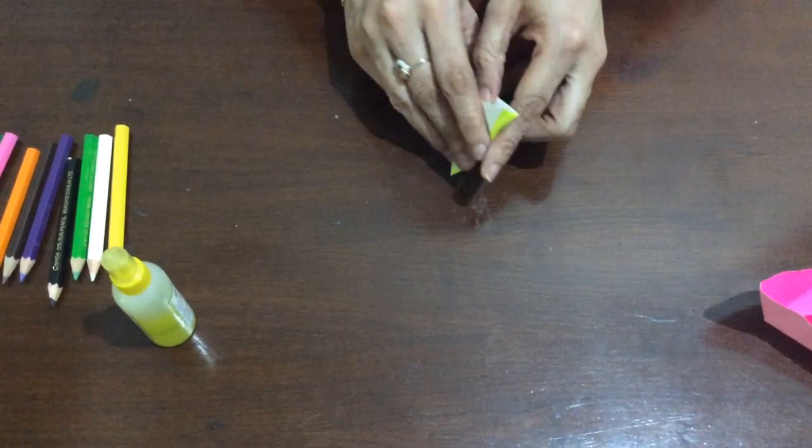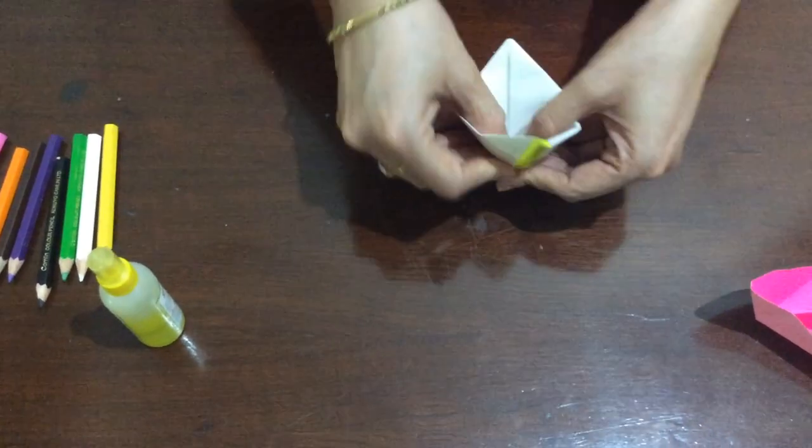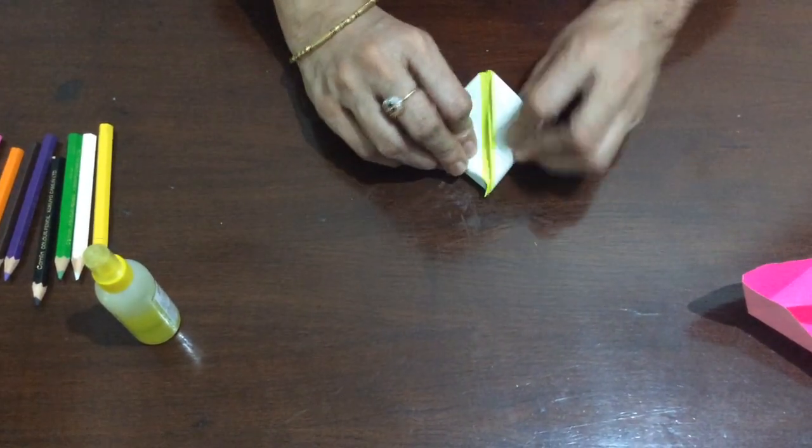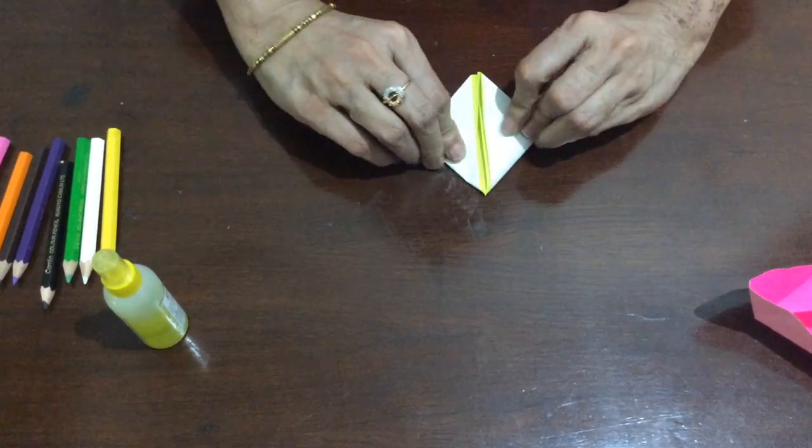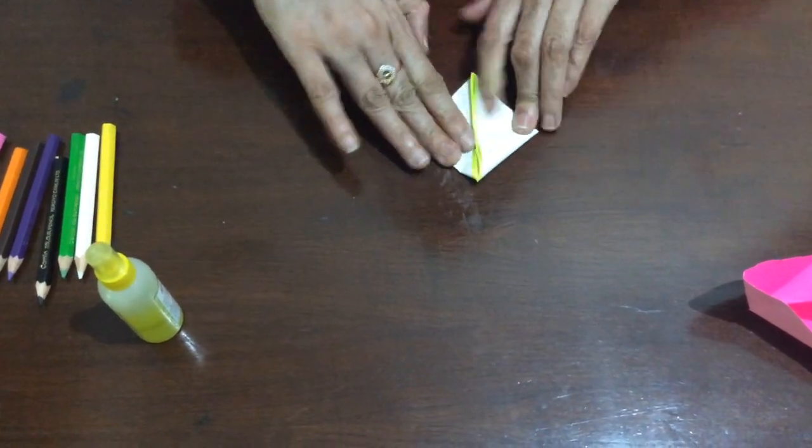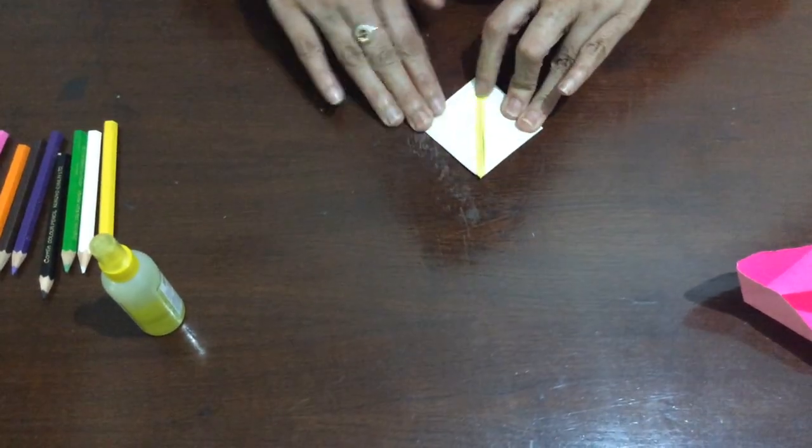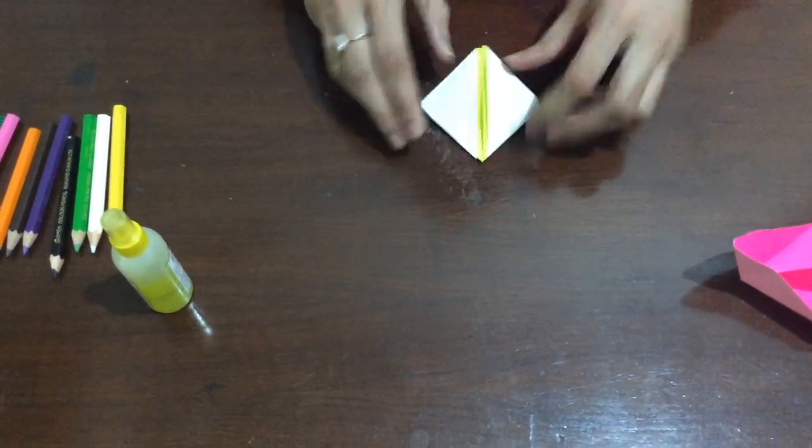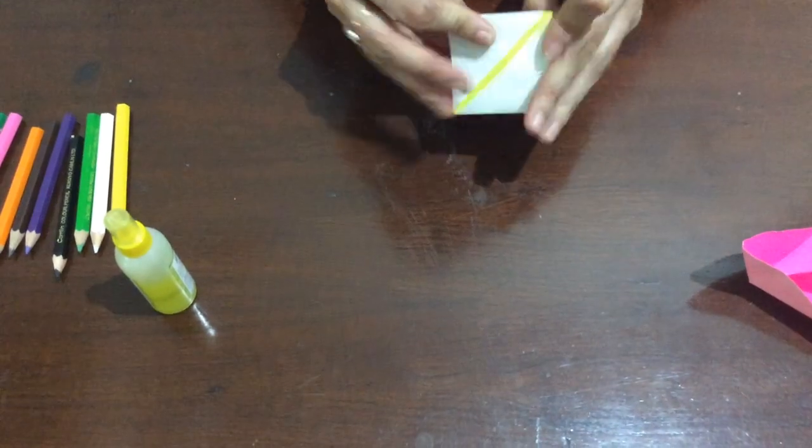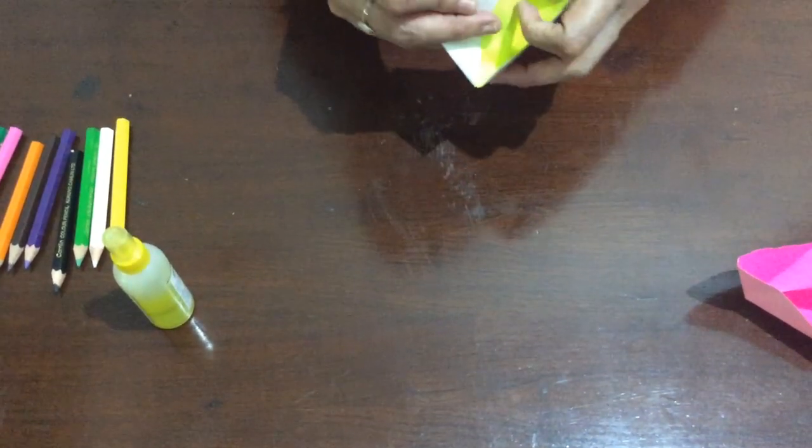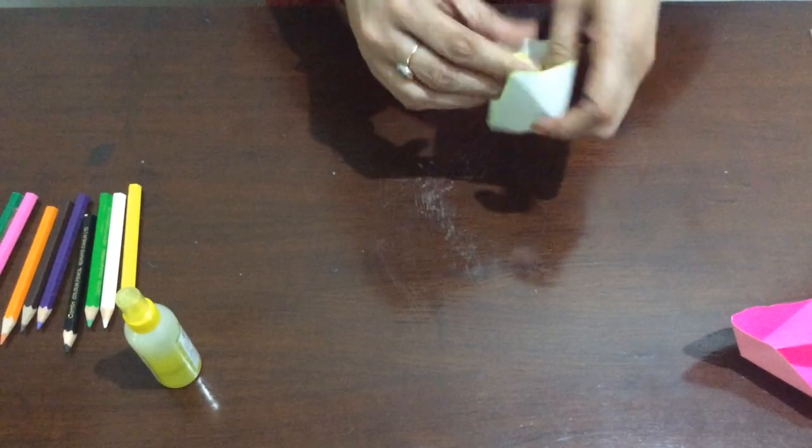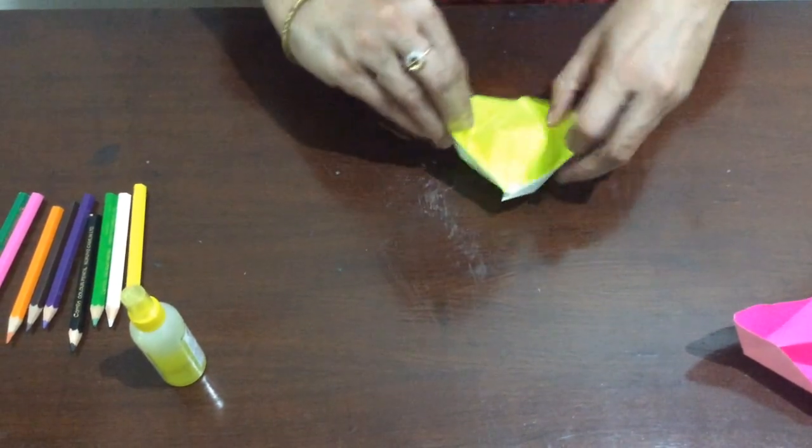Now ask the child to put both his thumbs into this triangle and press it like this. After this we have to open this like this.